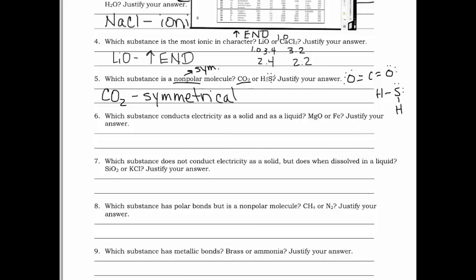Question six: which substance conducts electricity both as a solid and as a liquid? That means it conducts electricity all the time — that would be iron. You can justify by saying it has mobile electrons.